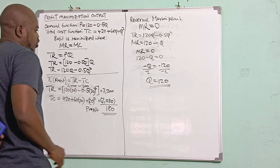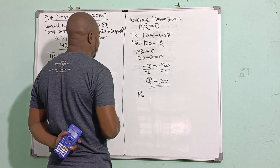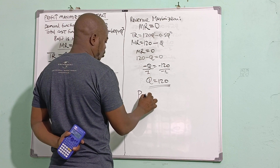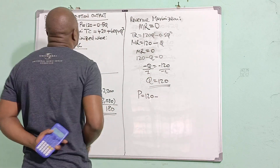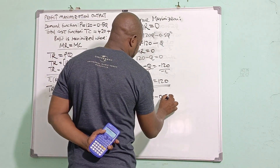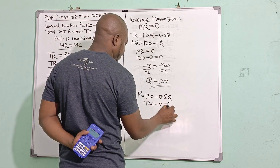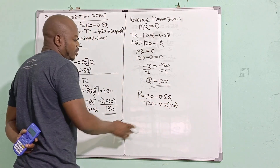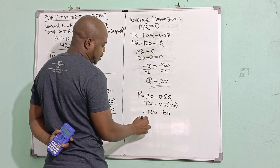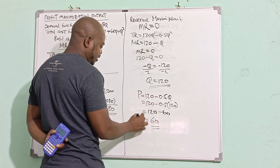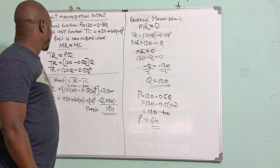From there I can still find the price that maximizes revenue — note this is revenue maximization, not profit maximization; these are two different things. Substituting Q = 60 into the demand function: P = 120 - 0.5(60) = 120 - 60 = 60. So the price at revenue maximization output is 60. Thank you. In my next tutorial I'll demonstrate how to minimize the total cost function.